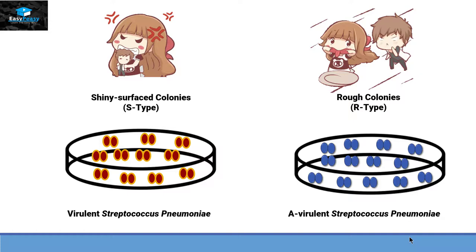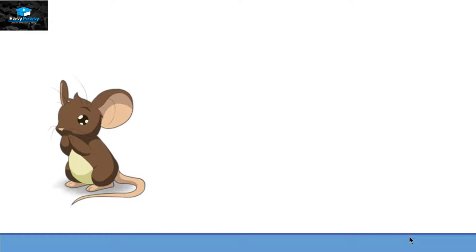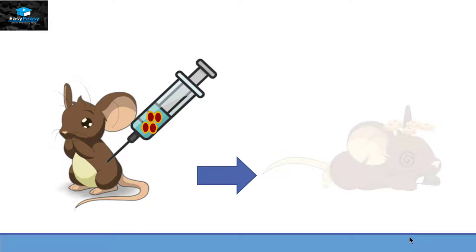Now let's see how the transforming principle was discovered. He took a mouse and injected it with the virulent type bacteria. As a result, the mouse died.